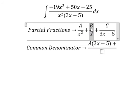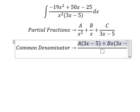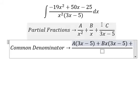This one is missing x and 3x minus 5, so B is multiplied by x times 3x minus 5. And the last one is x squared.